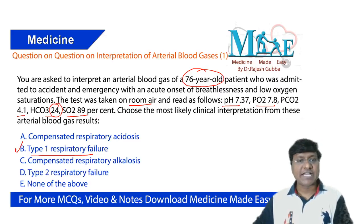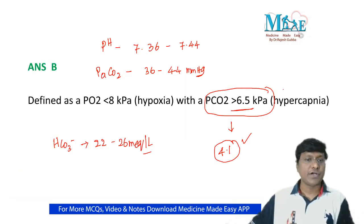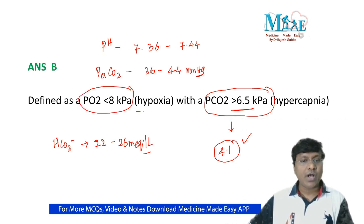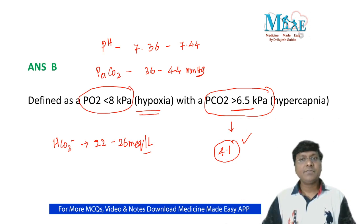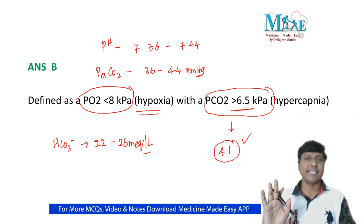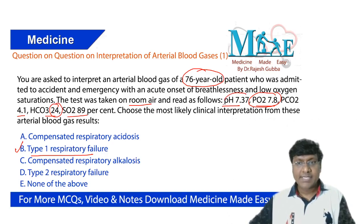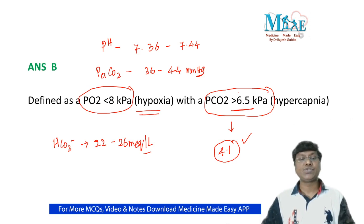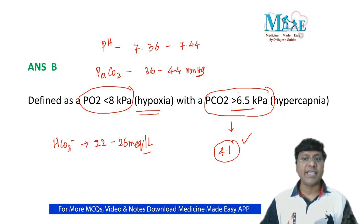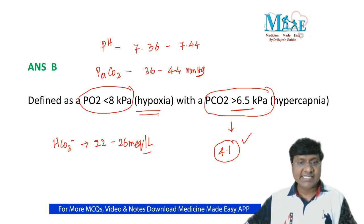The partial pressure of oxygen in this patient is 7.8 kilopascals. If the partial pressure of oxygen is less than 8 kilopascals, we call it hypoxia. So the patient has only hypoxia. Carbon dioxide is normal, bicarbonate is normal, and the pH is 7.37 — which falls within the normal range of 7.36 to 7.44. Therefore, after interpreting the ABG, our patient has only hypoxia, which is suggestive of type 1 respiratory failure.